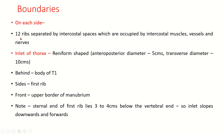On each side, 12 ribs are separated by intercostal spaces, which are occupied by intercostal muscles, vessels, and nerves. The inlet of the thorax is kidney-shaped, with an anteroposterior diameter of 5 cm and a transverse diameter of 10 cm. Behind it is bounded by the body of T1, on the sides by the first rib, and in front by the upper border of the manubrium. The sternal end of the first rib lies approximately 3 to 4 cm below the vertebral end, so the inlet slopes downwards and forwards.